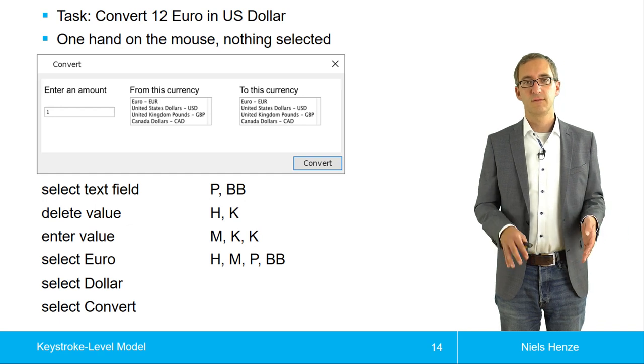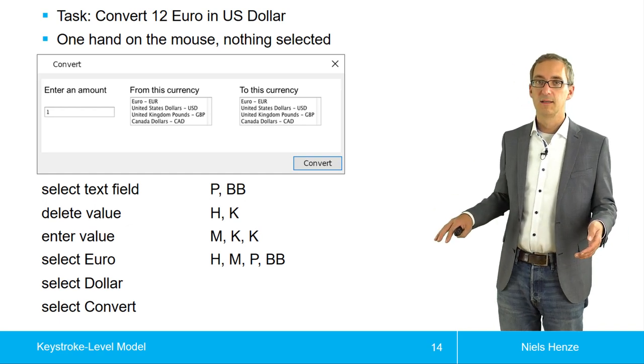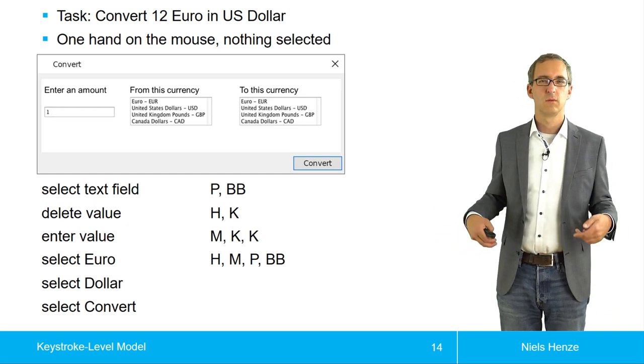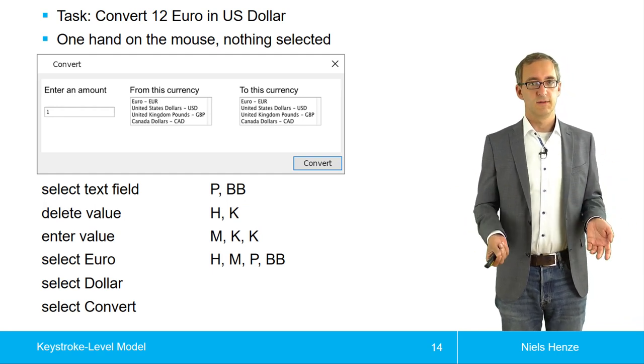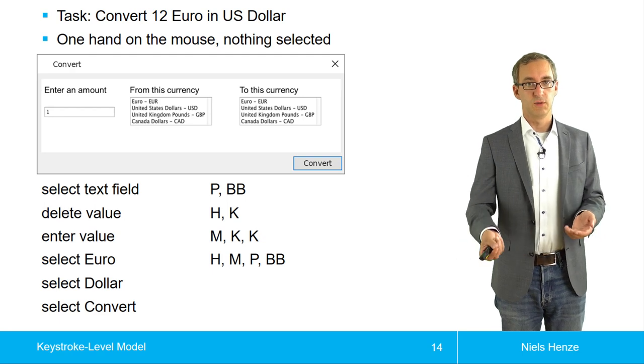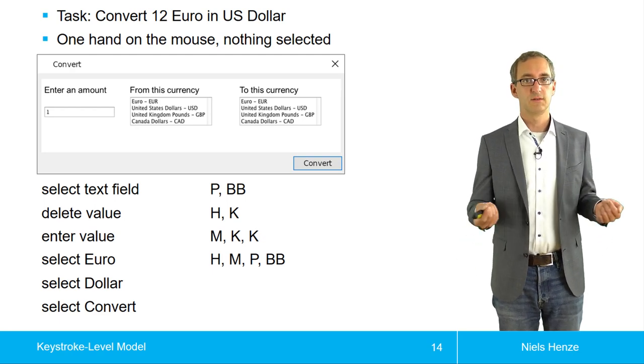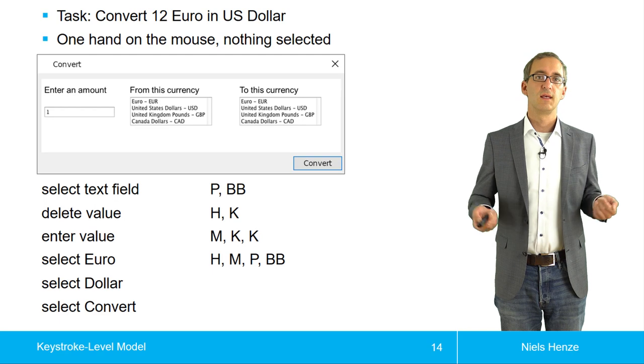Then we want to select Euro. What does it mean? We have to go back to the mouse again. Then we have to figure out what was the currency where I come from. Then we have to point there, point to Euro, and then we have to click, which means two times B.